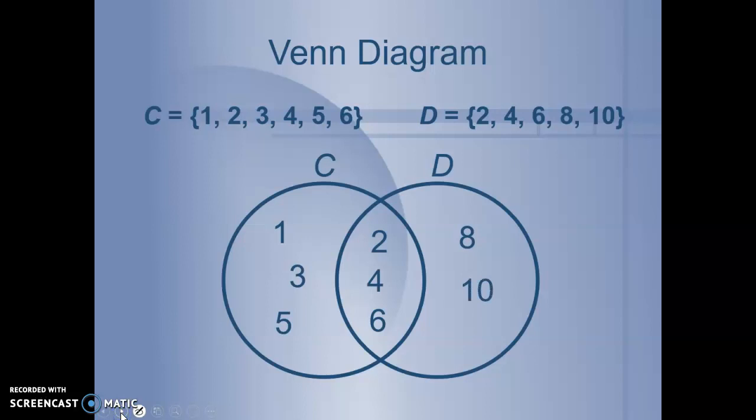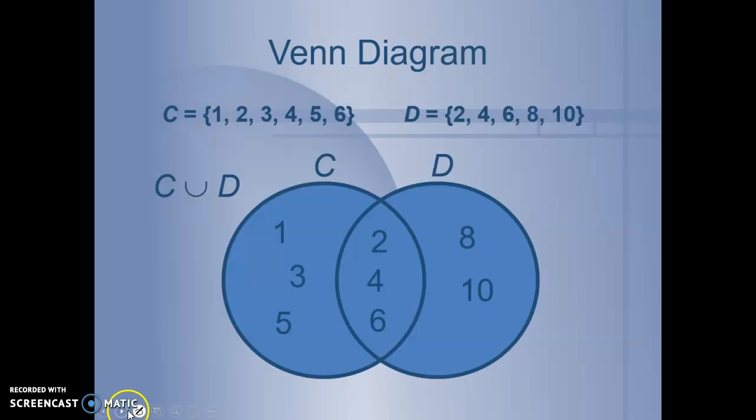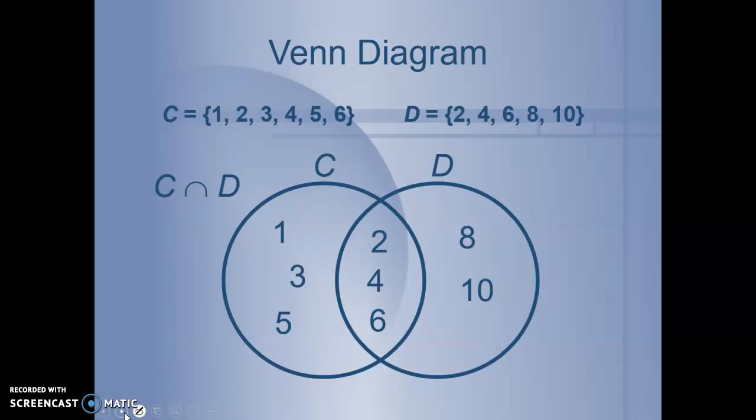This part in the middle, this 2, 4, 6, that is the union of the sets, or what they have in common. So the union of C and D is all the numbers that they have, while the intersection of C and D are the parts where they overlap. Just the 2, 4, and 6. So the union is everything they have in common, and the intersection is what overlaps. I think I said that wrong a second ago. So make sure you listen to this part right here. The union is everything they have in common, and the intersection is what overlaps.